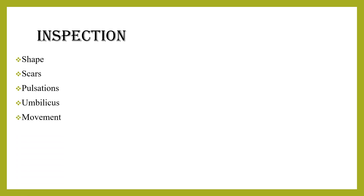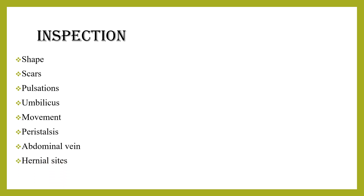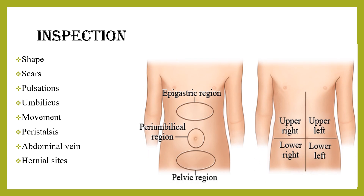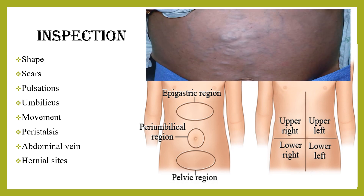Check for prominent abdominal veins and determine the direction of blood flow. Blood flows away from the umbilicus in inferior vena caval obstruction, but flows from above downward in constrictive pericarditis. Caput medusae — as seen in the picture — shows several veins radiating from the umbilicus, which is due to portal vein obstruction. If blood flows towards the umbilicus, it is due to constrictive pericarditis.